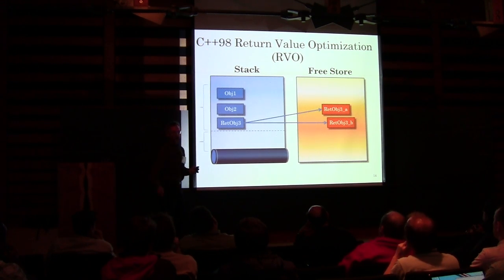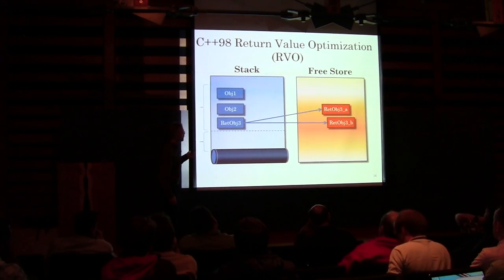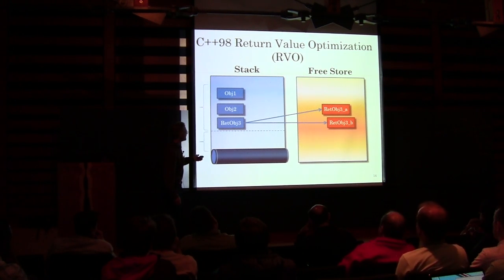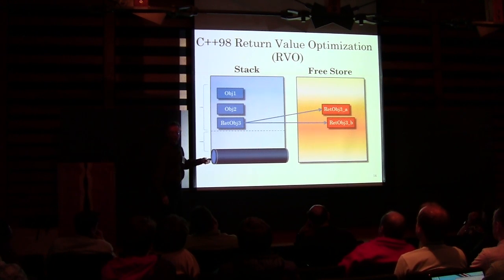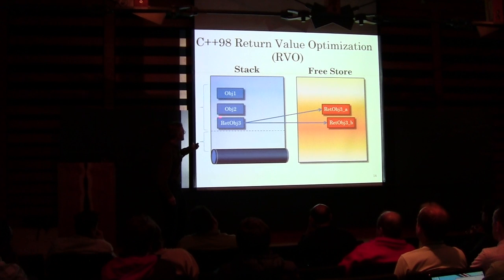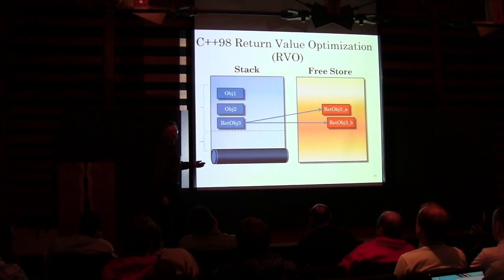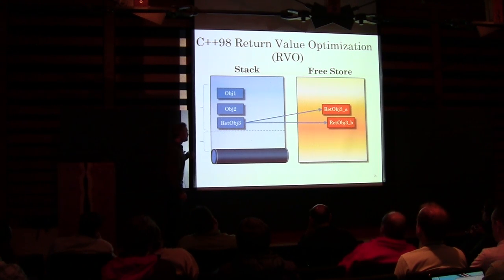Starting in 1991, the return value optimization was introduced. What was interesting about it is that you didn't even have to build the returned object locally at all. Somebody upstairs, when they said you're going to return this, handed you a place where you can build this thing. You build it in place where it will be returned. There are no moves. There are no copies. It's just where it needs to be. This is cool.